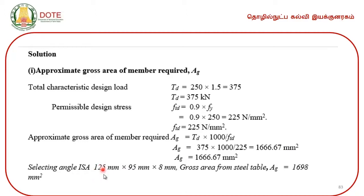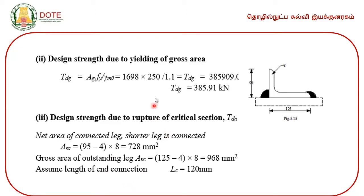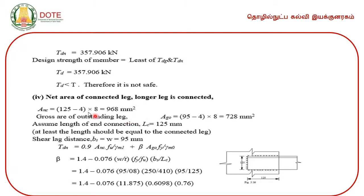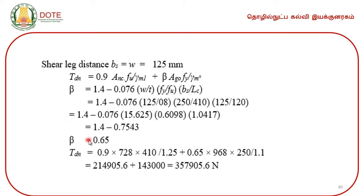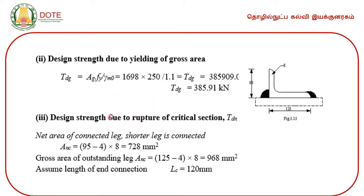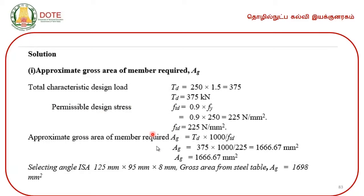We select ISA 125 — Indian Standard Angle 125 by 95 by 8 — and the gross area of the selected trial section is found to be 1698 millimeter square. With this angle we perform the analysis: we calculate the design strength due to yielding of gross area TDG, design strength due to rupture of critical section TDN, as well as design strength due to block shear.